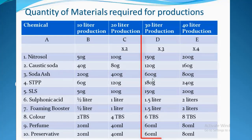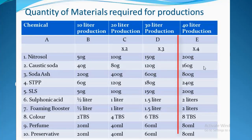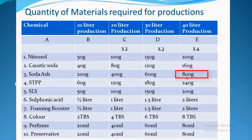For 40 liters (column E), multiply all quantities in column B by 4. Nitrosol: 50g × 4 = 200g. Caustic soda: 40g × 4 = 160g. Soda ash: 200g × 4 = 800g. STPP: 60g × 4 = 240g. Apply the same multiplication to all remaining materials.